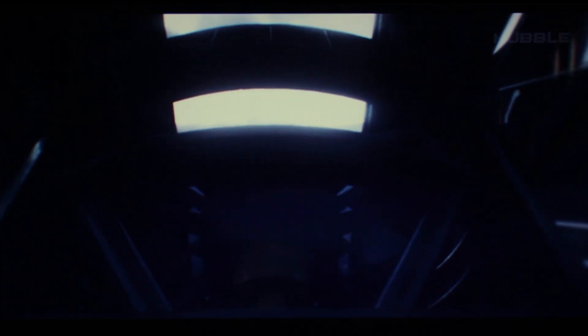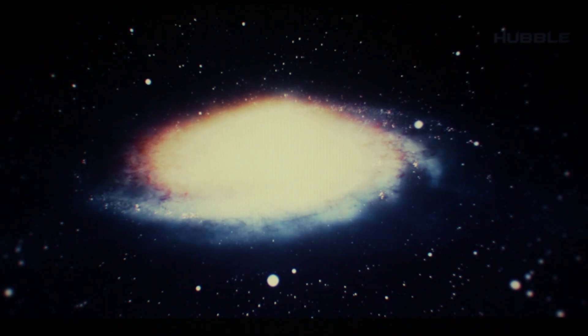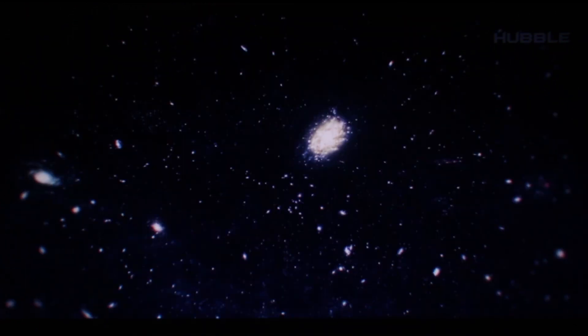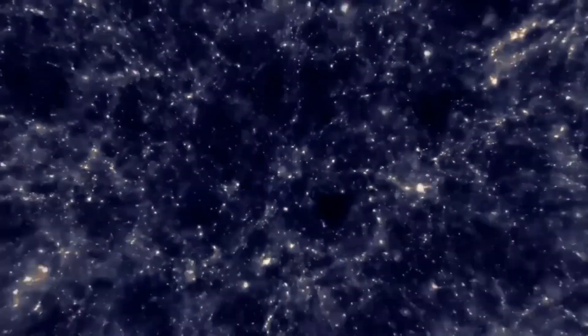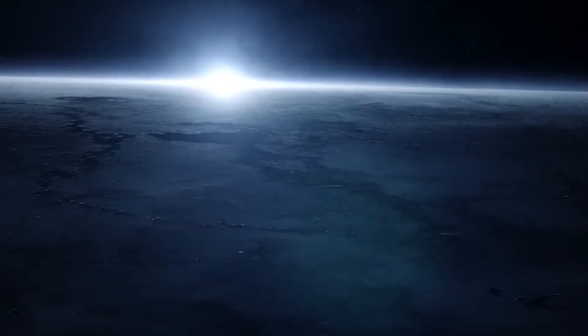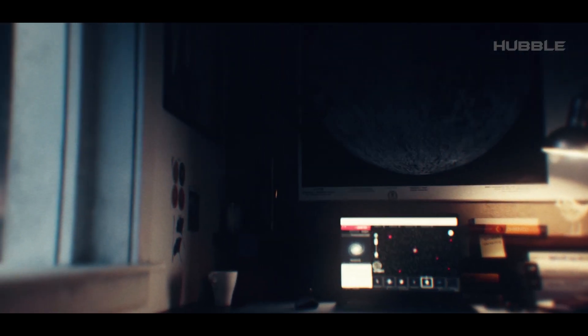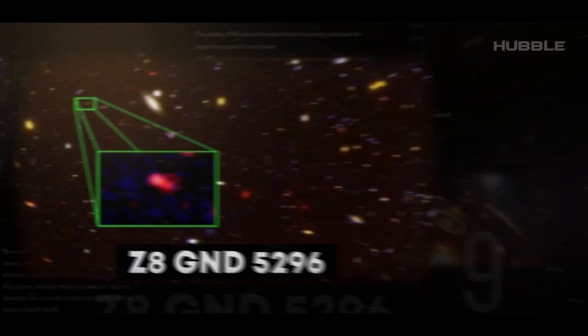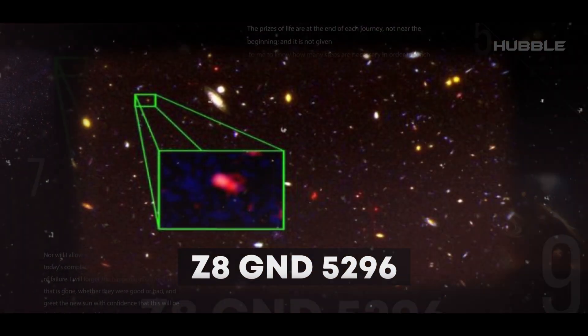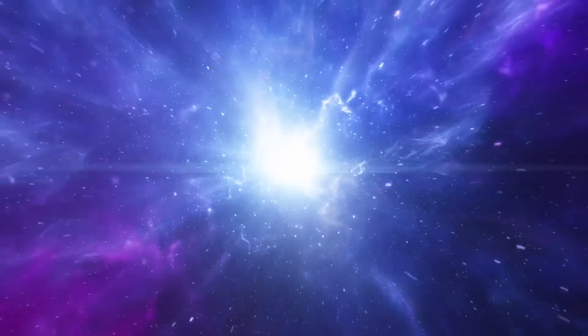However, with the latest telescopes, scientists were able to find out that the first galaxies were already formed in ancient times, about 400 million years after the Big Bang. Today, it is possible to observe some of the oldest objects and find out their size and composition. One of them is the galaxy Z8 GND 5296.